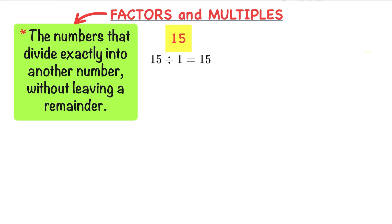15 divided by 1 equals 15, so 1 is a factor as there is no remainder. 15 divided by 2 equals 7 remainder 1, so 2 is not a factor as there is a remainder. 15 divided by 3 equals 5, so 3 is a factor.